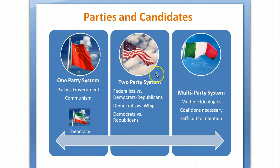The second is a two-party system, and that's the United States. Spain also has a two-party system, but for the most part we think of the United States as the prime example. What you need to remember is that in a two-party system there are multiple parties, but only two main parties. The history of the two-party system in the United States spans three eras.